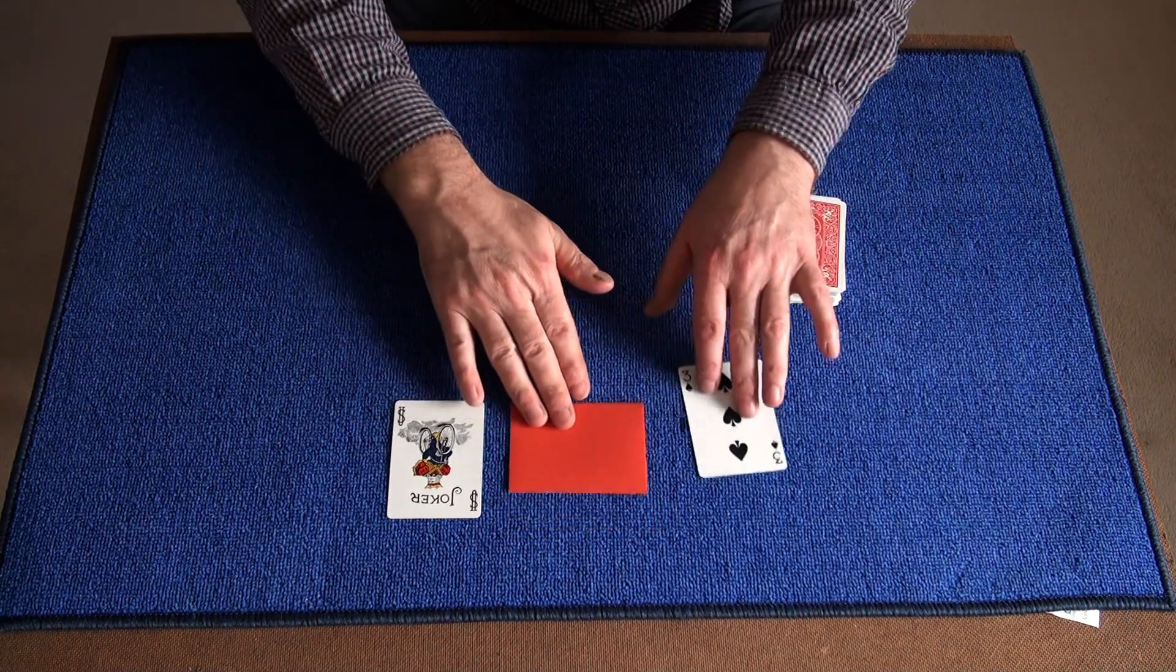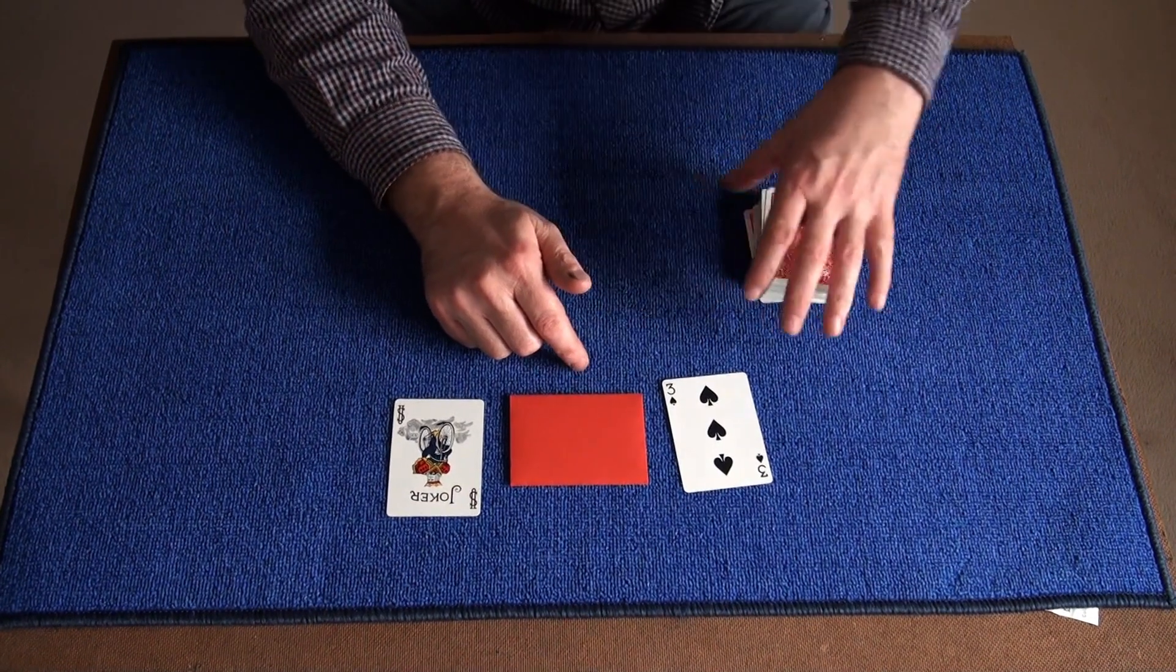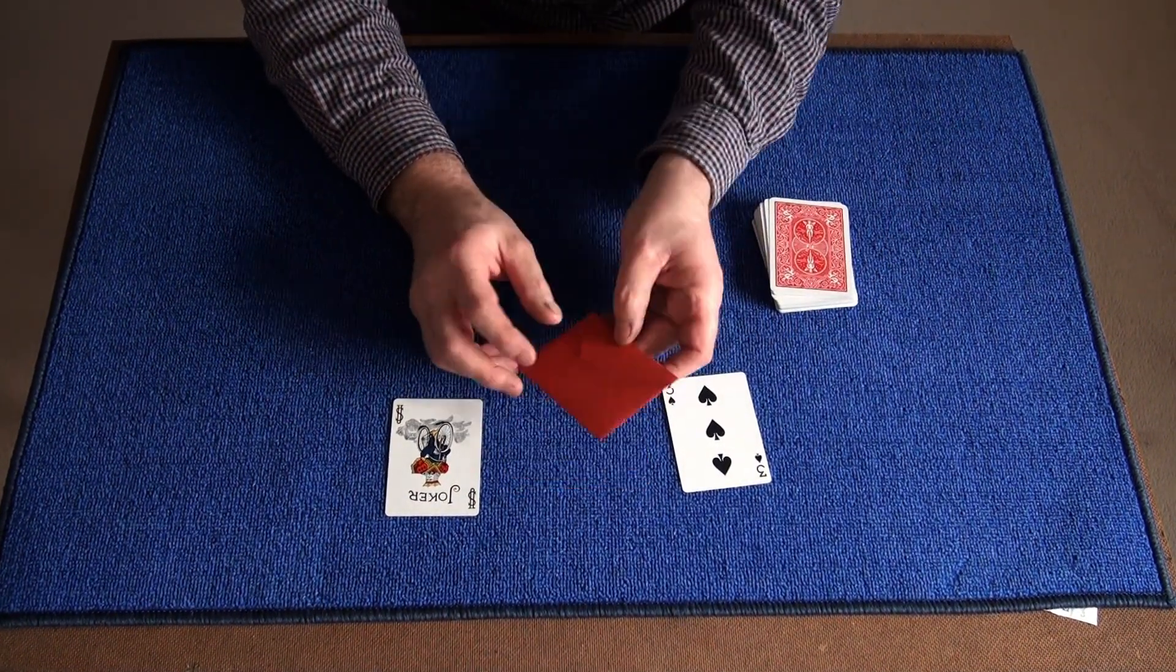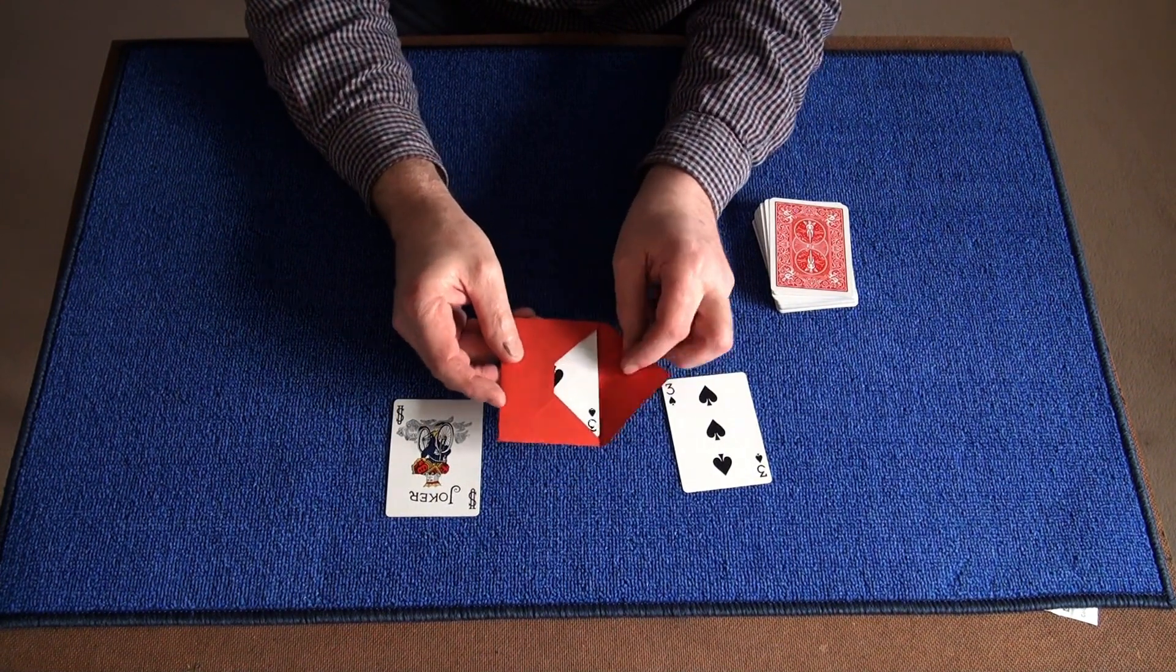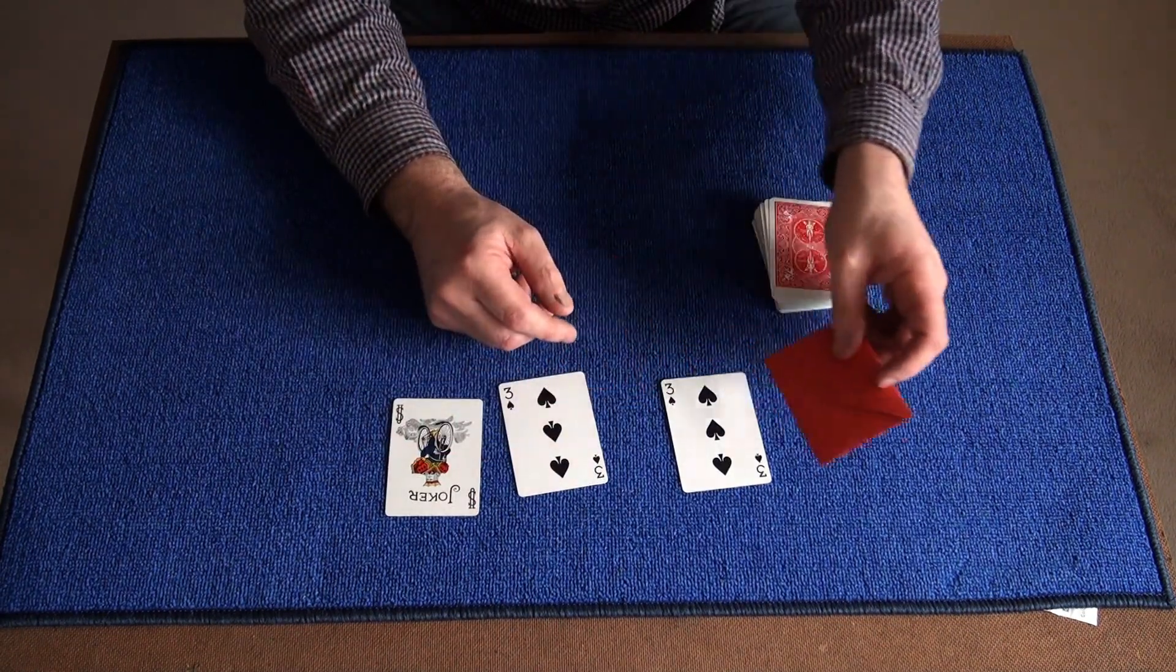Right. Now I was now using the two as a Three of Spades, because within this prediction envelope there's a card, and one card only. And I'm just going to show you. And there it is. Three of spades.